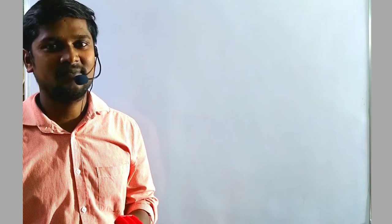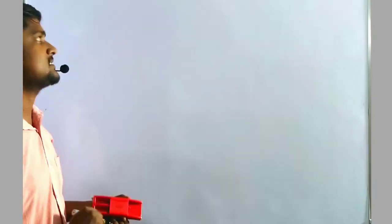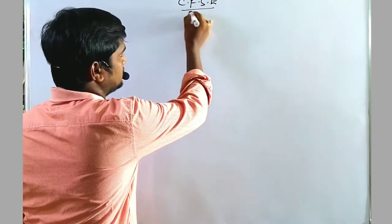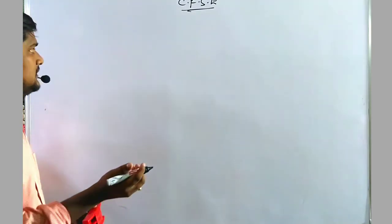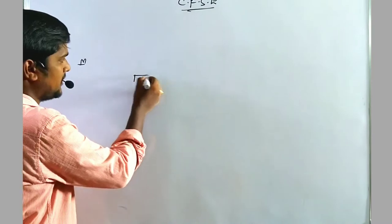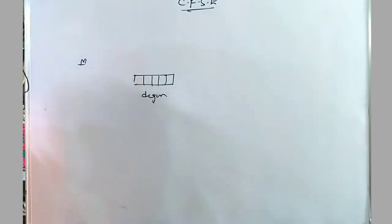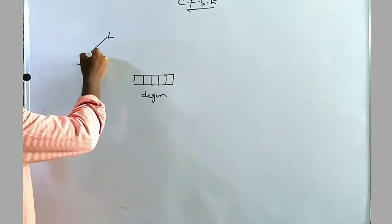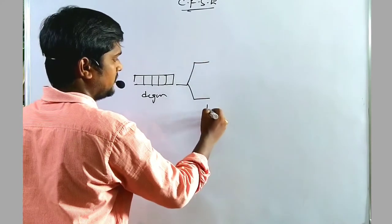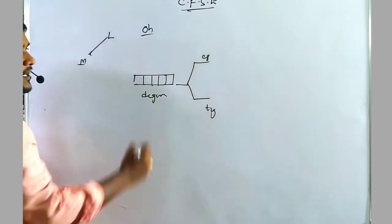Welcome to RPV Resonance Chemistry. Now we are going to discuss about Crystal Field Stabilization Energy. Whenever a ligand approaches the central metal atom, the metal atom has d orbitals — five d orbitals — those are degenerate orbitals. Whenever a ligand approaches the central metal atom, they are split into two sets: one is T2G, another one is EG, in case of octahedral complexes.